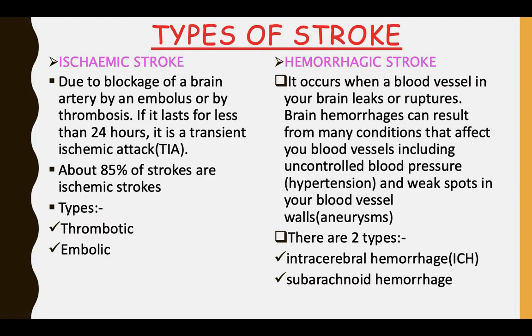Hemorrhagic stroke occurs when a blood vessel in your brain leaks or ruptures. Brain hemorrhages can result from many conditions that affect your blood vessels, including uncontrolled blood pressure — hypertension — and weak spots in your blood vessel walls, known as aneurysms. There are two main types: intracerebral hemorrhage and subarachnoid hemorrhage.